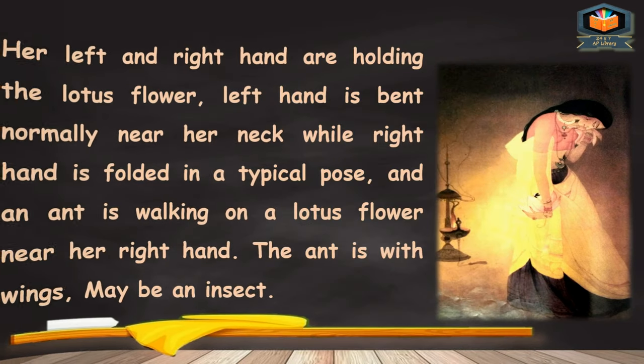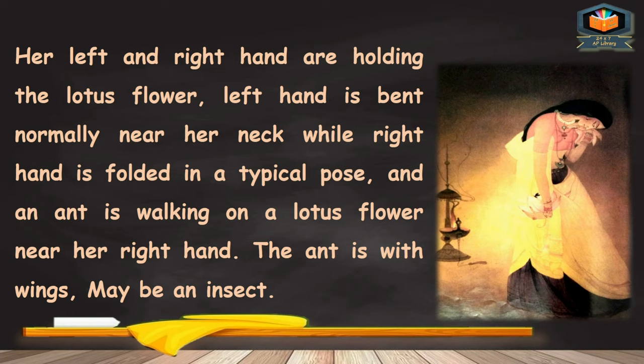Her left and right hands are holding a lotus flower. The left hand is bent normally near the neck, while the right hand is folded in a typical pose. An ant is walking on the lotus flower near her right hand. The ant has wings and may be an insect. The lotus flower plant is bent, and you can see the outside in the background.